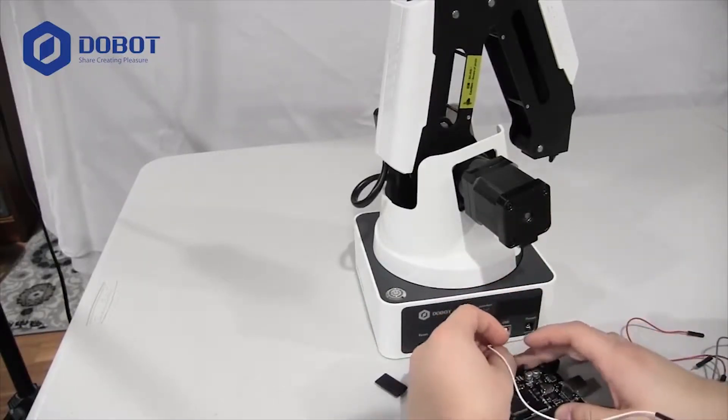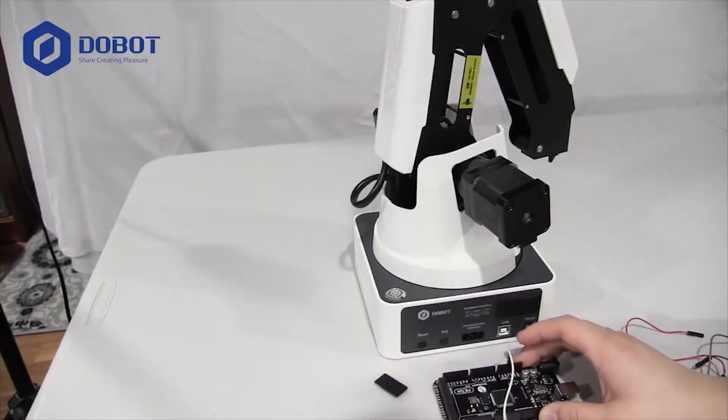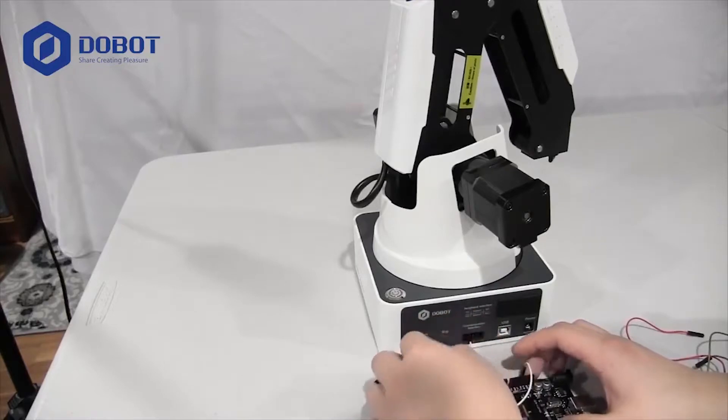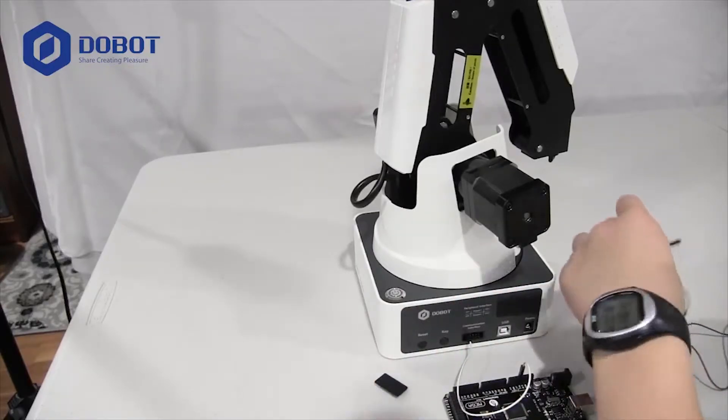So, we'll take one wire, put it into five volts right here, plug it into the top left of the communication interface of the Dobot Magician.